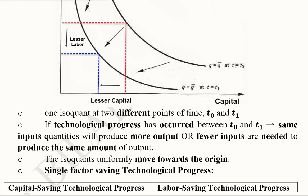The isoquants uniformly move towards the origin. This is what happens when there is technological progress. There is a shift in the isoquant and it is towards the origin, it is converging.